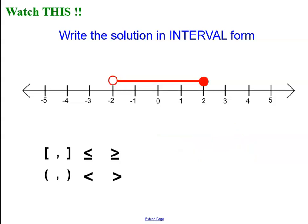All right, one more. This one does not have an arrow. It has a specific lowest and highest point. The lowest point is negative 2. The highest point is positive 2. But the circles are different. One is open, and one is closed.